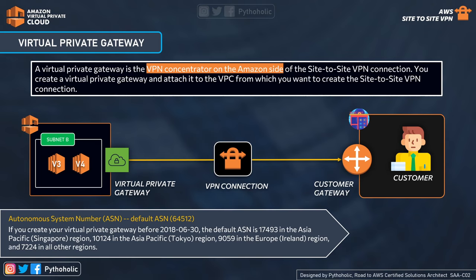Once the transit gateway is created, you can come back and select it from the list when creating the VPN connection. For customer gateway devices, if you want to know which devices Amazon has already tested and supports, you can search online for the list of supported devices with device-specific configuration files available in the Amazon VPC console. Your customer gateway device can be a physical or software appliance.